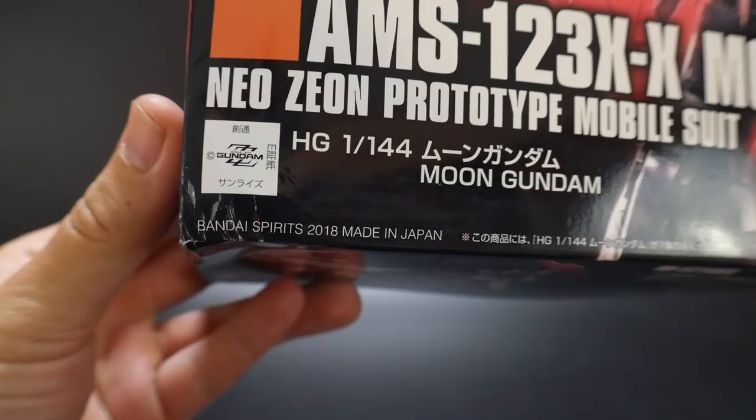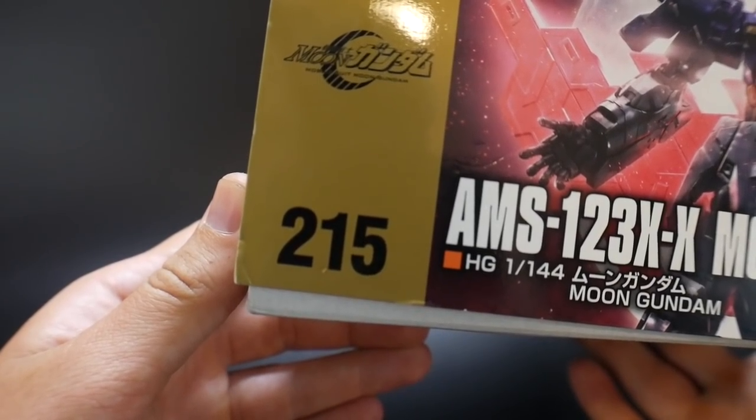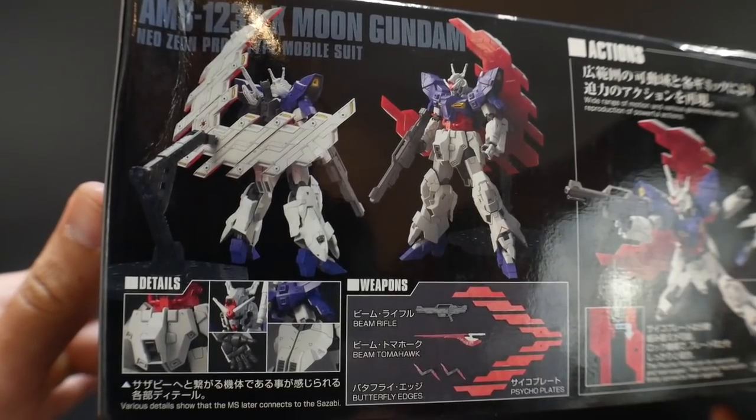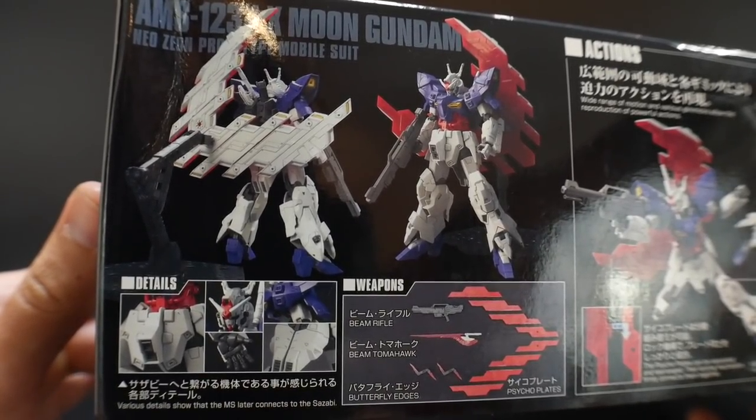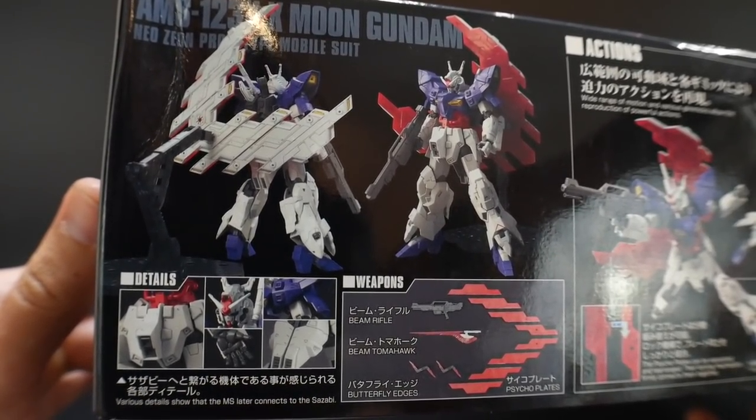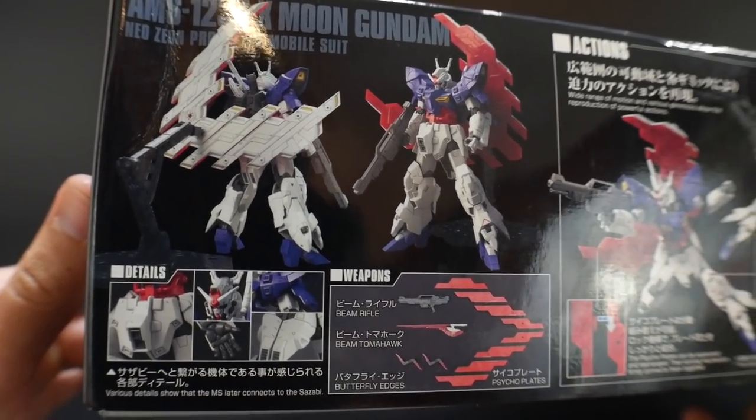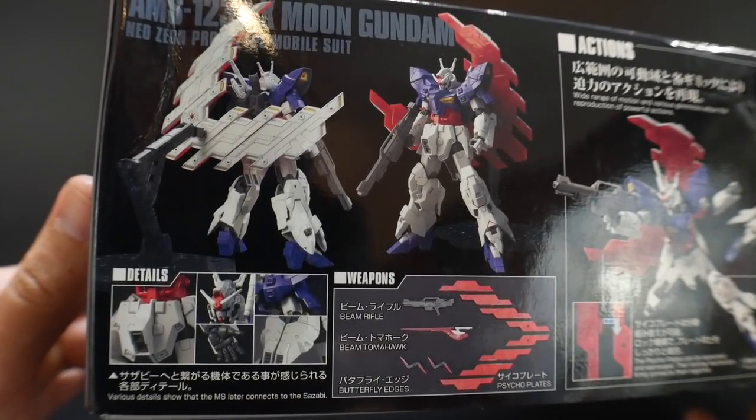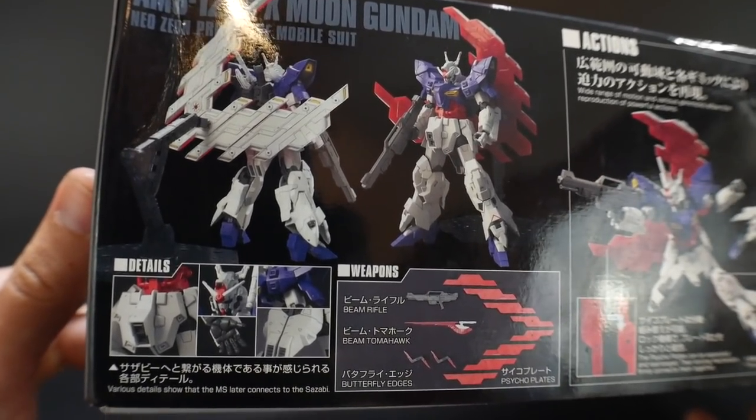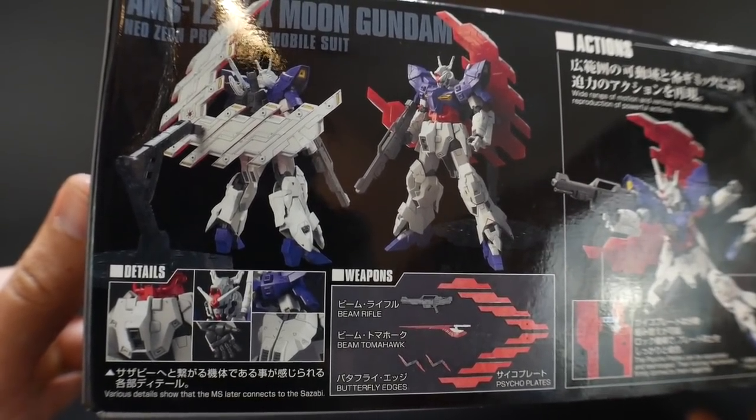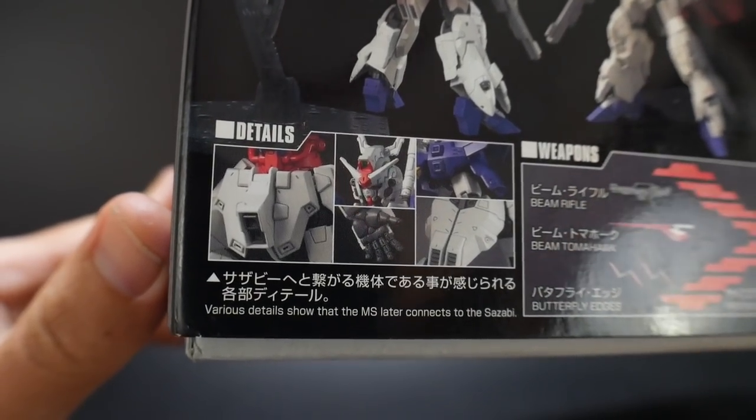So this was released in 2018, number 215 in the Universal Century line, and retails for about 3,000 yen. Taking a look at the side of the box, I think this kit looks phenomenal. The front and rear shots really showcase the level of details that this kit's going to have, and also just seeing the crescent on the back. I think it's overall going to make this kit stand out amongst most high grades in your collection.